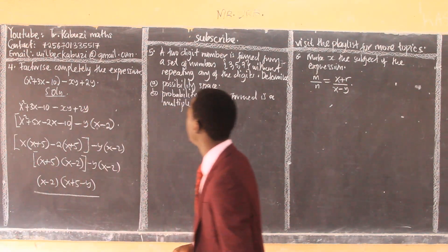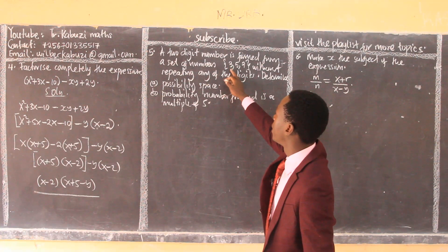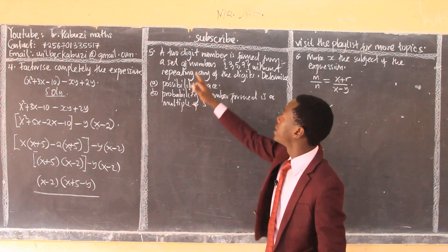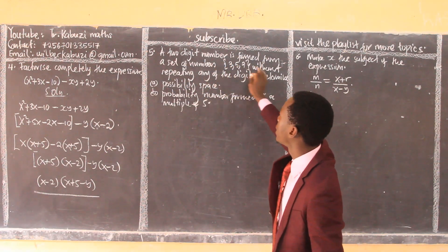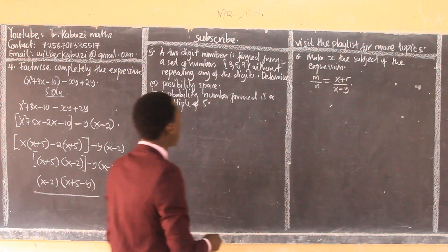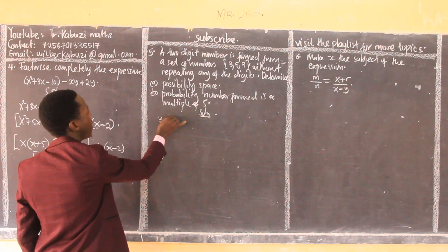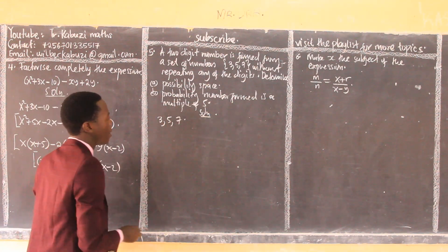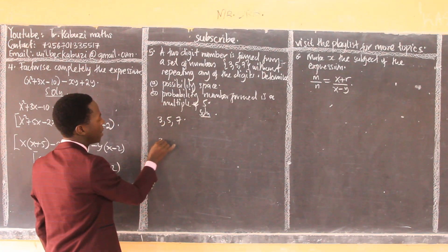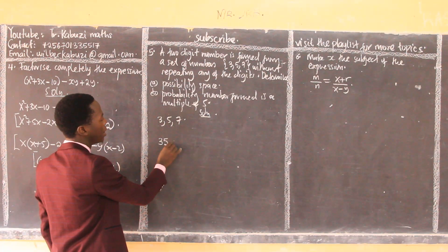Now we come to number five. Number five says that we have three numbers: 3, 5, and 7. I want us to form two-digit numbers from these numbers without repeating any of the digits. Determine the sample space. Now, the numbers we have are 3, 5, and 7. If I want to form a two-digit number without repeating anything, I can first form 35, then I can form...